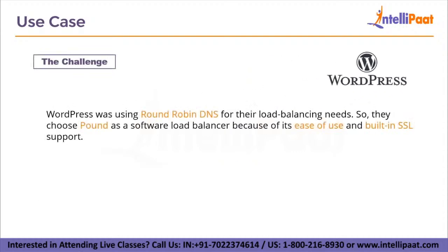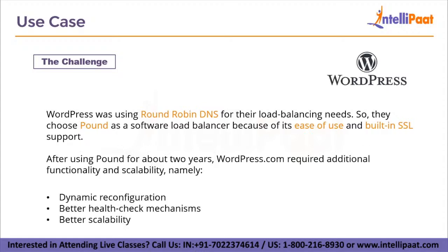Let's see what the challenge was for WordPress.com. They were using round-robin DNS for their load balancing needs. Round-robin DNS is like an algorithm — a piece of code that handles load balancing — but it is not very efficient and it is very old. So they chose a software called Pound, which acted as a load balancer because of its ease of use and built-in SSL support. This was fine for a while, but after using Pound for about two years, WordPress.com required additional functionality and scalability.